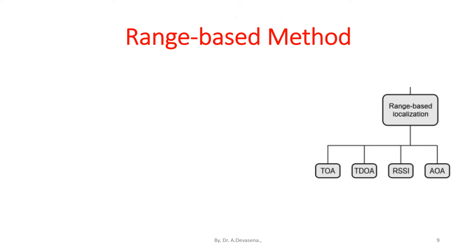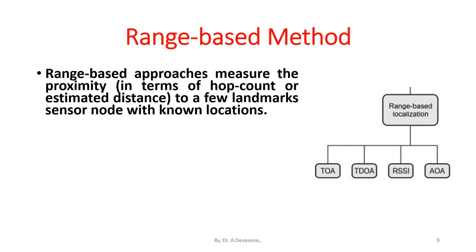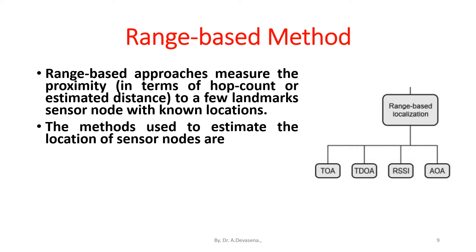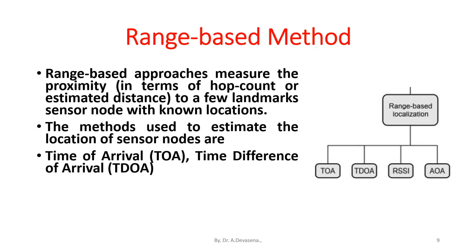Range-based method approaches measure the proximity in terms of hop count or estimated distance to a few landmark sensor nodes with known locations. The methods used to estimate the location of sensor nodes are time of arrival (TOA), time difference of arrival (TDOA), angle of arrival, and received signal strength (RSS).